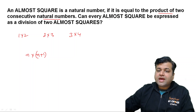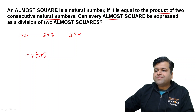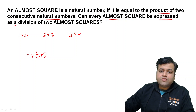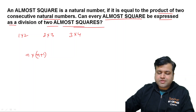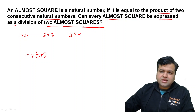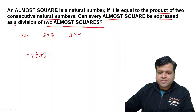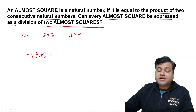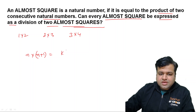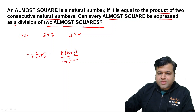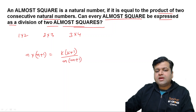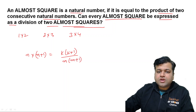The question says: can every almost square be expressed as a division of two almost squares? So what the question is asking — let's assume N×(N+1). Can we write it as a division of two almost squares? That is, can we write it as K×(K+1) divided by M×(M+1), where N, K, and M are all natural numbers?